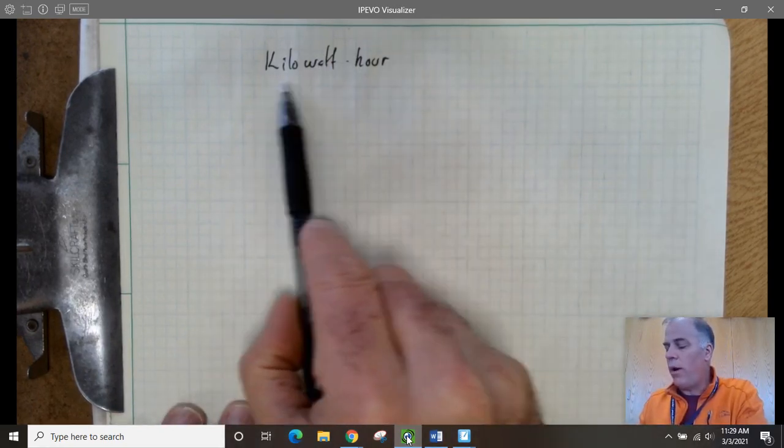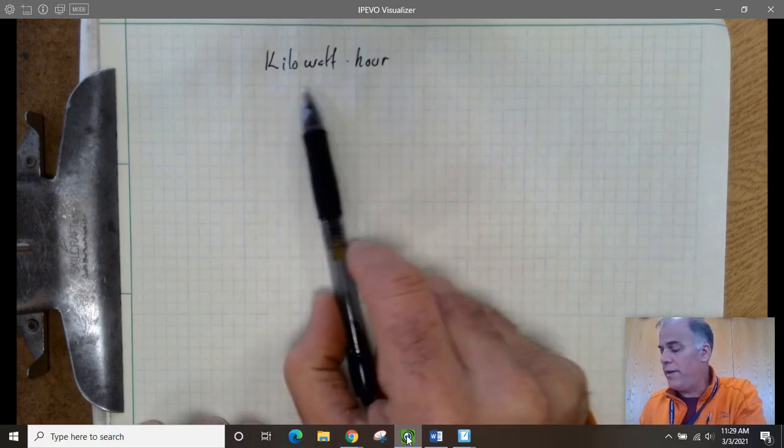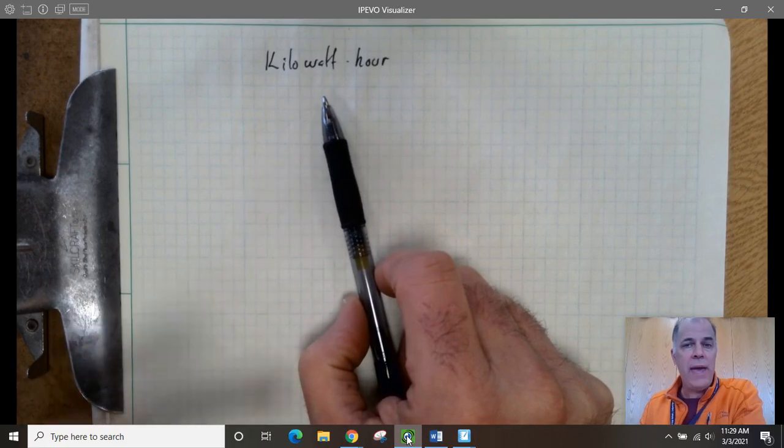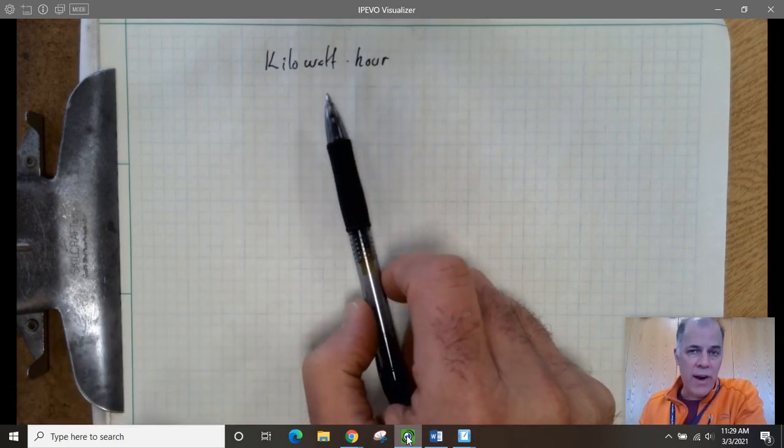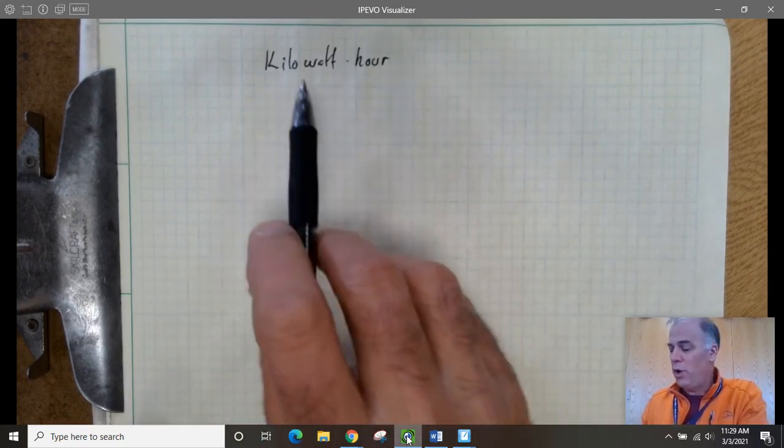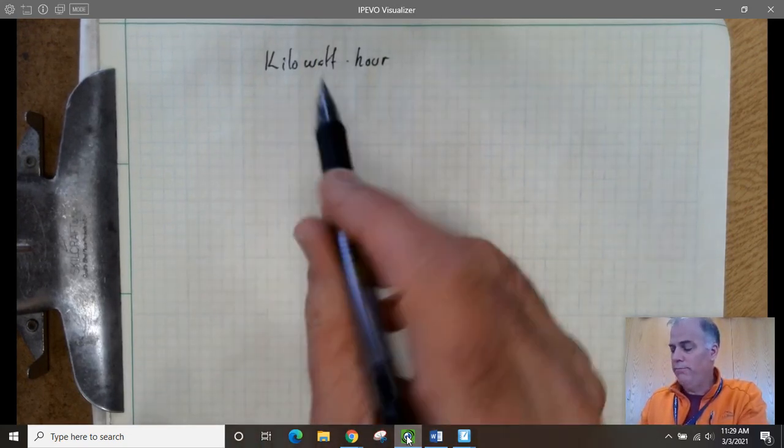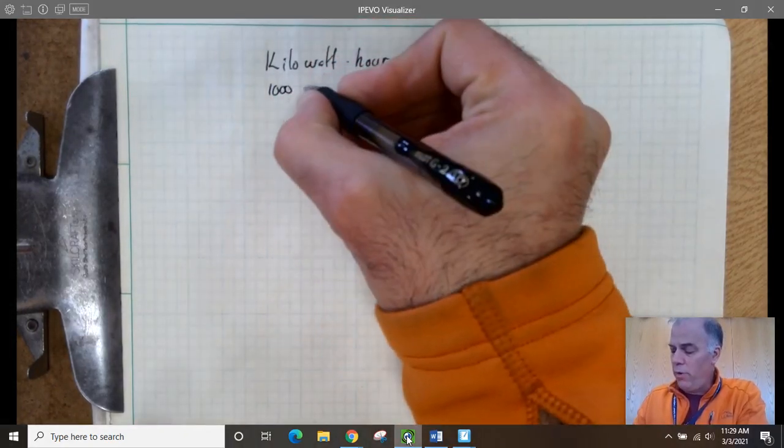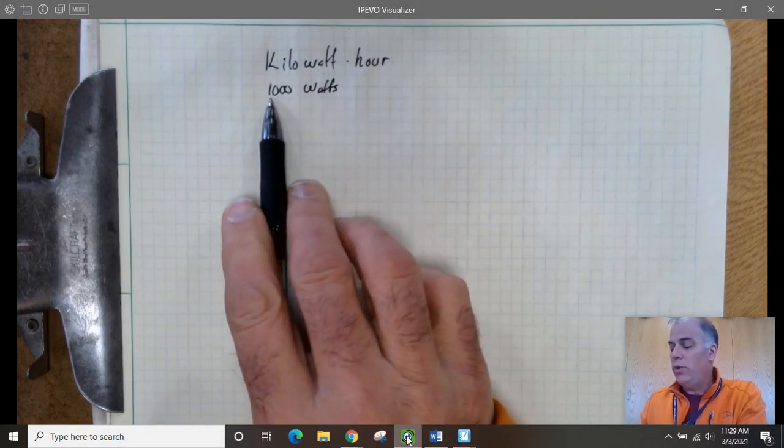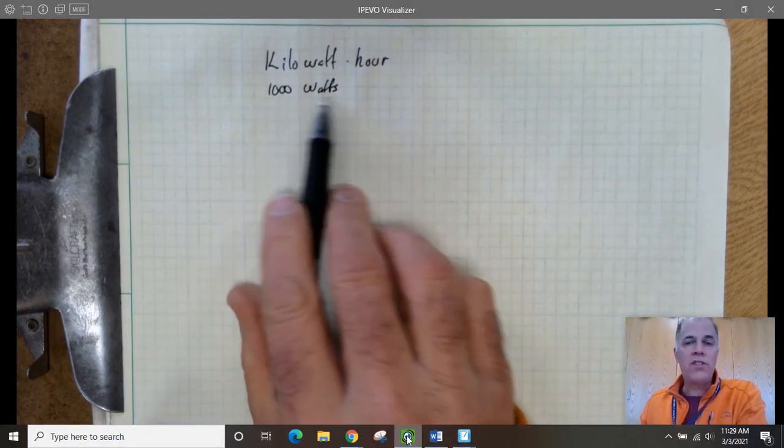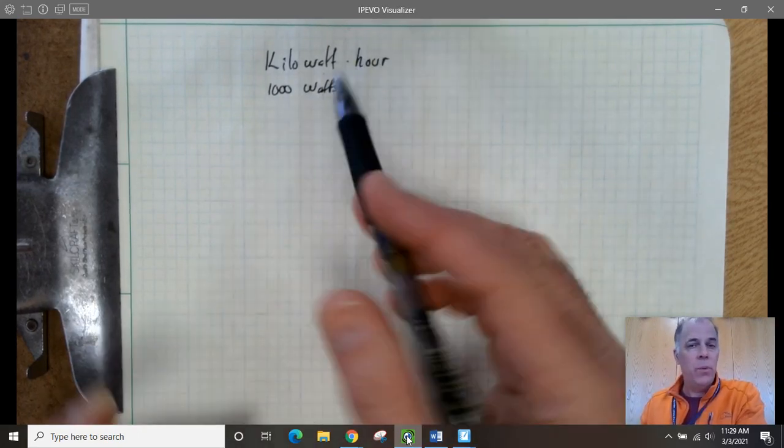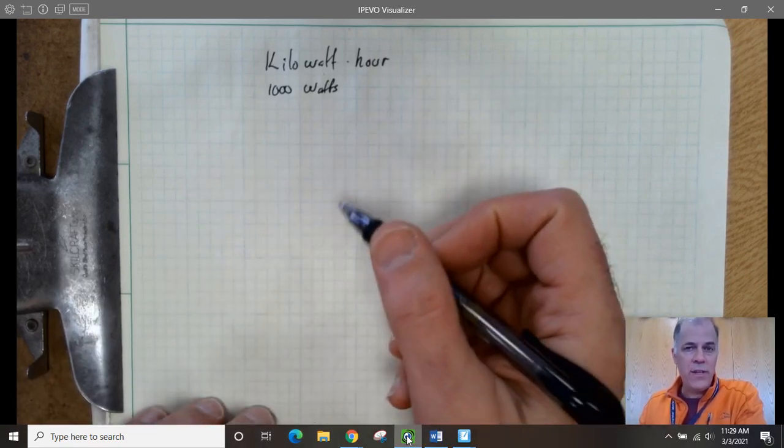So a kilowatt hour, you have seen this term before. This is the term that shows up on your electric bill. This is the way that they bill us, make us pay for the electricity that we use in our house. So kilowatt, that you probably recognize, stands for 1,000 watts. So what this means is you use 1,000 watts of power, electrical power, in your house for one hour, and they will charge you money for that electricity that you use during that time.